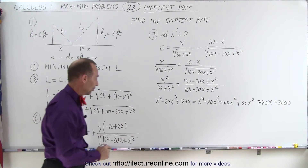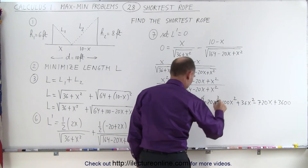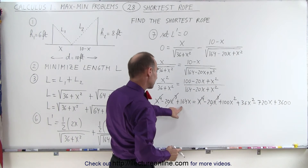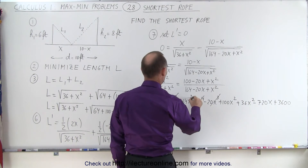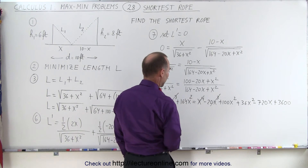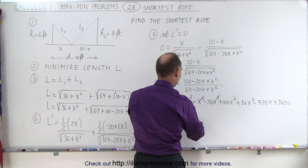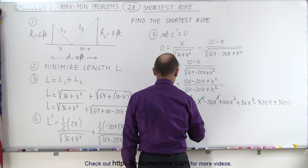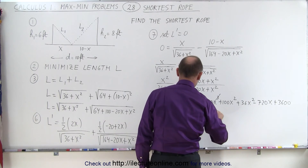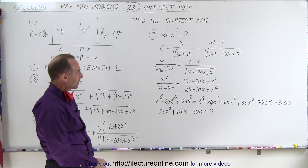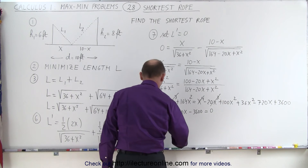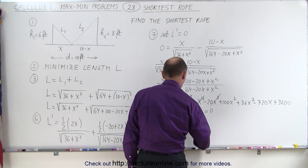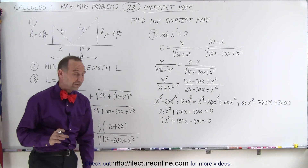Good thing we can cancel out like terms. The x to the fourth and minus 20x cubed terms cancel on both sides. Moving all remaining terms to the left side: 164x squared minus 136x squared gives 28x squared, plus 720x, minus 3600 equals zero. Dividing everything by 4 gives 7x squared plus 180x minus 900 equals zero.